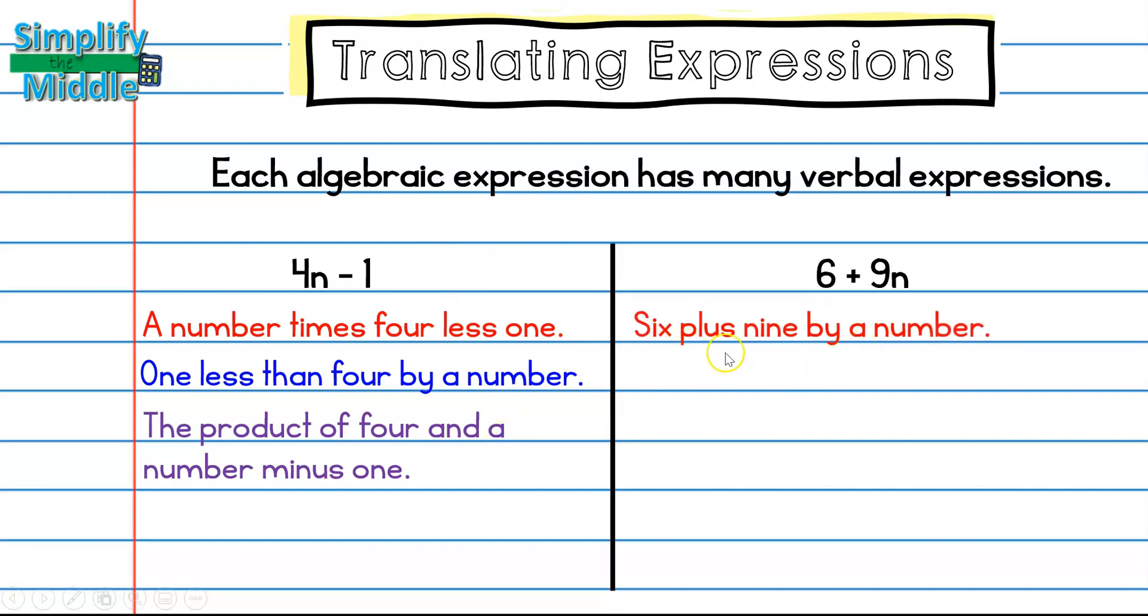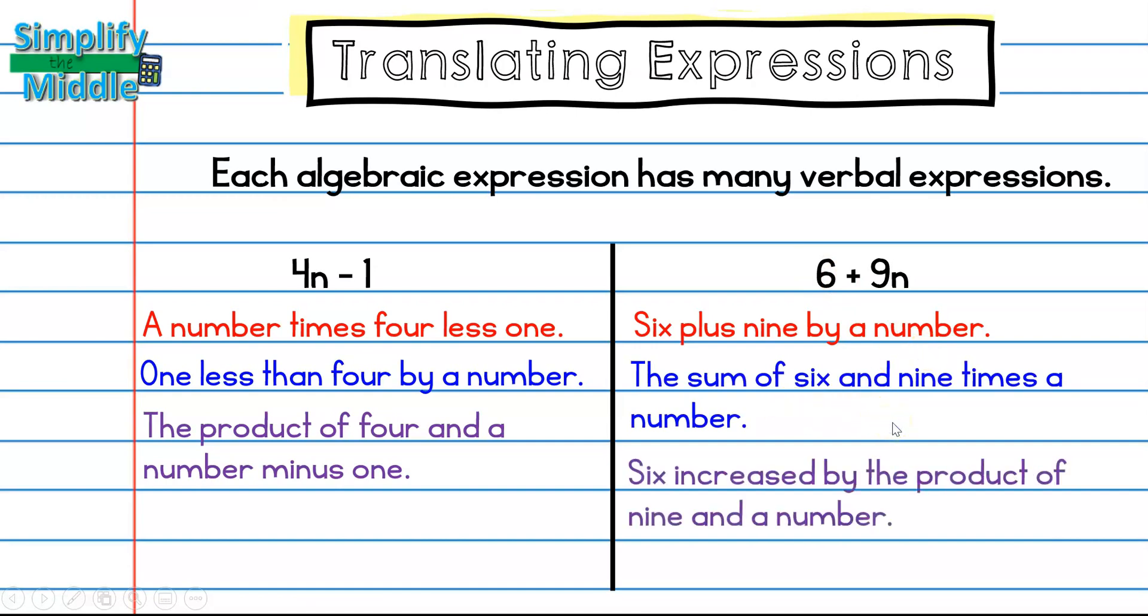For this, we have six plus nine by a number. So I have six, and I added nine times n. Then I had the sum of six and nine times a number, and six increased by the product of nine and a number. All mean the same thing. Six, and then I have addition, nine, and multiplication of the variable with that nine.